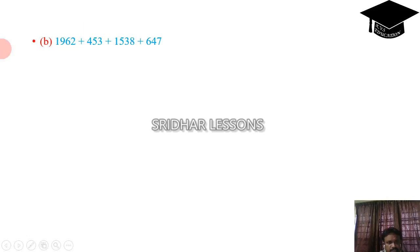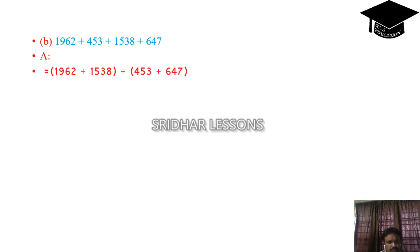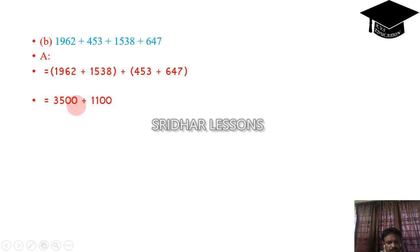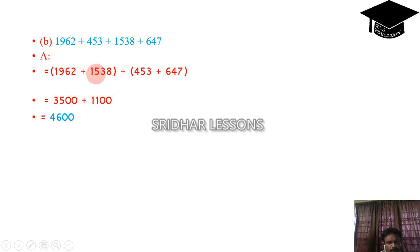Second sum: 1962 plus 453 plus 1538 plus 647 can be rearranged as 1962 plus 1538 plus 453 plus 647. Adding 1962 and 1538 gives 3500, and adding 453 and 647 gives 1100. We can add them all, but for simplicity we rearrange to simplify the problem.